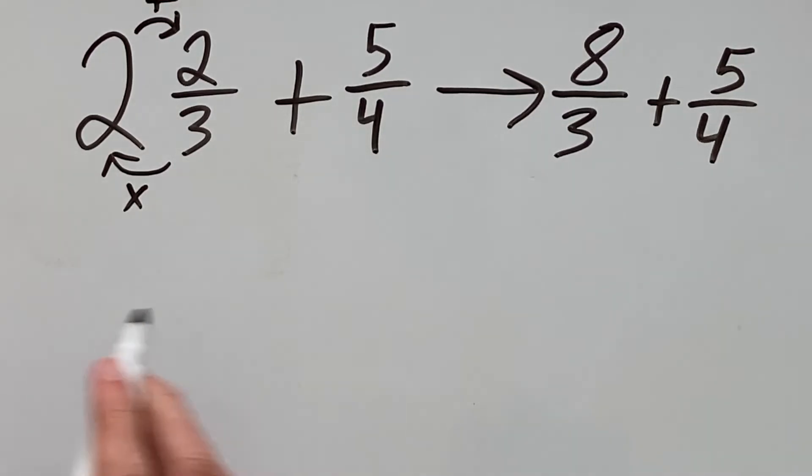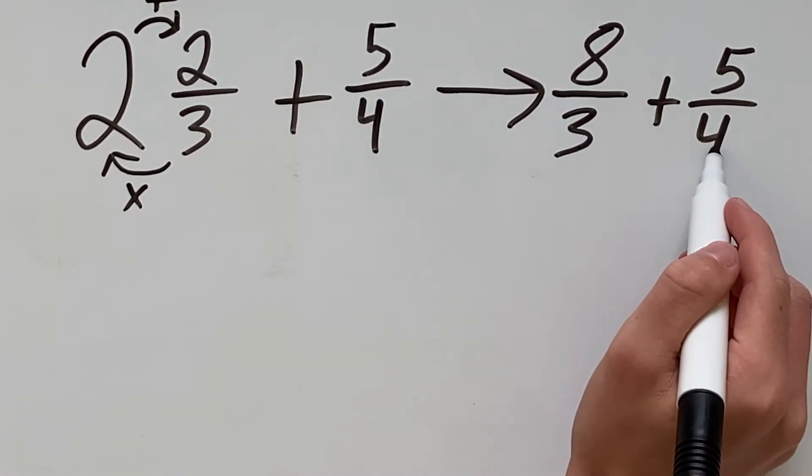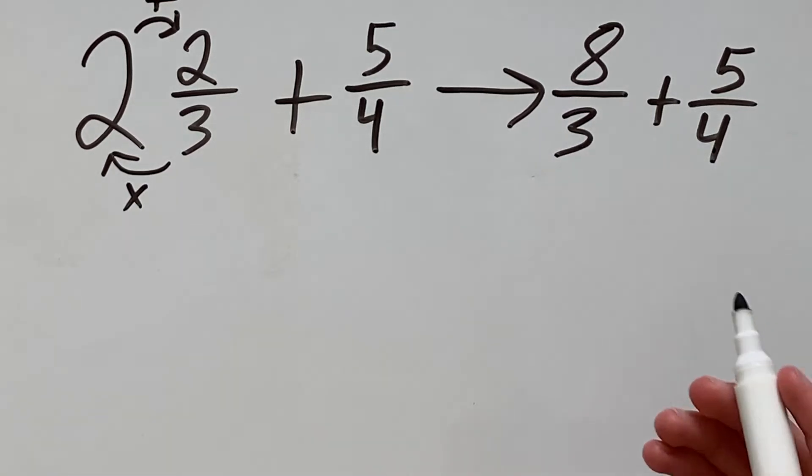In this example, the least common denominator of 3 and 4 is 12.